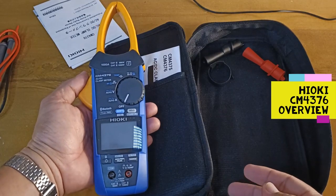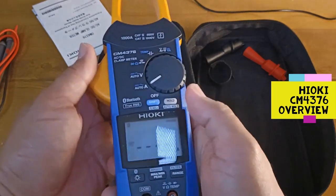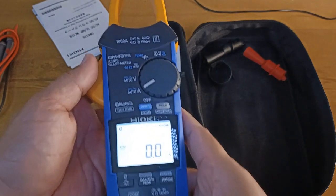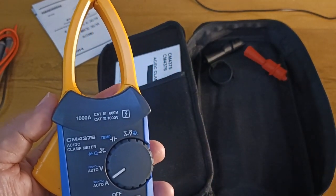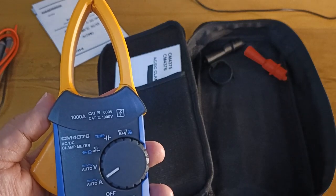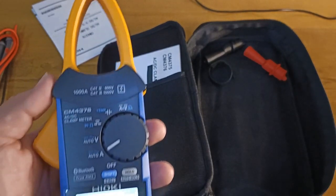Hi guys, this is the Hioki CM4376 AC-DC current clamp meter. This is rated at 1000 amps category 4 at 600 volts and category 3 at 1000 volts.